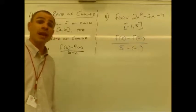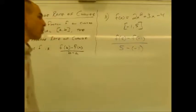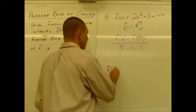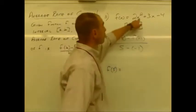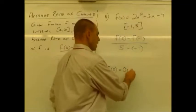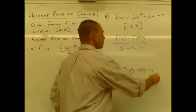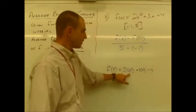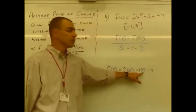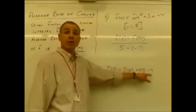Numerator, obviously we're going to need f of 5 and f of negative 1. So let's hammer that out real quick. f of 5. So we're going to plug 5 in for x. So we have 2 times 25 plus 3 times 5 minus 4. So that's 50 plus 15, 65. Take away 4 gives us 61.